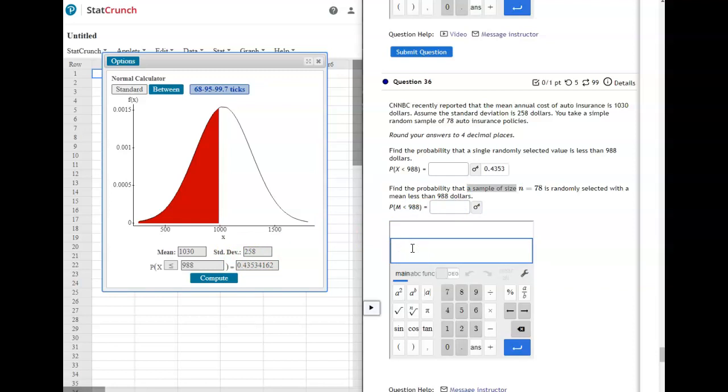So here we need to do our standard deviation 258 divided by the square root of 78, our sample size. And that's what you're going to put in for the standard deviation.